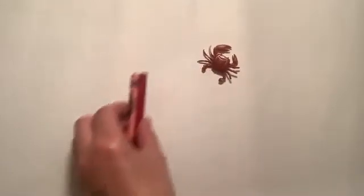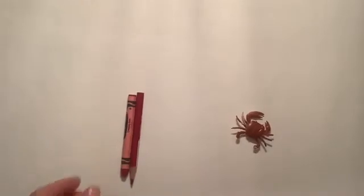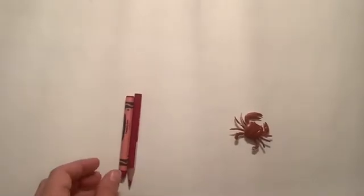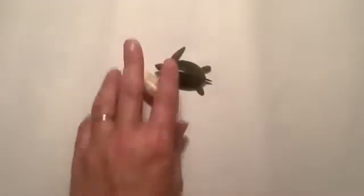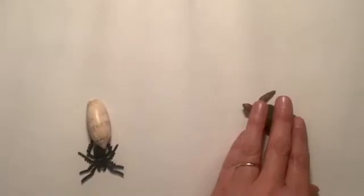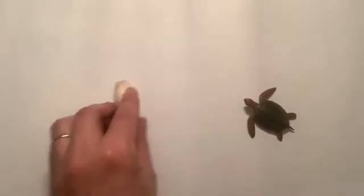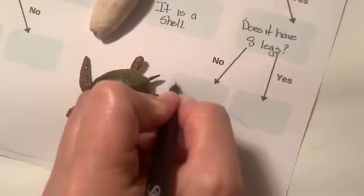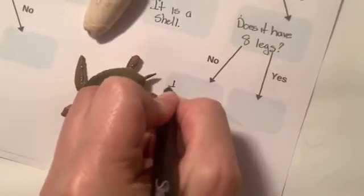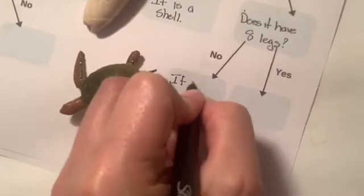Think about a question that divides your first group into two groups. For example, does the item have claws? Repeat this process until only one item is remaining in each group. When only one item is remaining in each group, that item can be identified.